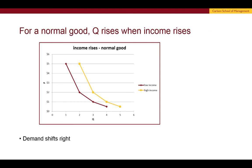With a normal good, when income rises, the quantity that an individual would purchase rises as well. The maroon demand curve is the individual's demand curve for this good when his or her income is low, and the gold demand curve is the same individual's demand curve when income is high. An increase in income shifts the demand curve to the right. That's true for a normal good because when your income goes up, the quantity you purchase of that good also goes up.